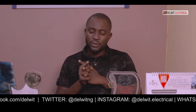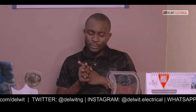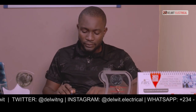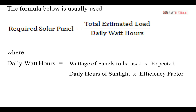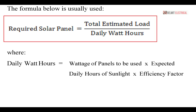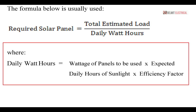We need to carry out a calculation to determine the number of solar panels required for your building. There is a standard formula: Required Solar Panels = Approximate Total Load ÷ Daily Watt Hours. The Daily Watt Hours formula is: Wattage of Panels × Expected Daily Hours of Sunlight × Efficiency Factor.